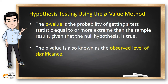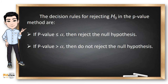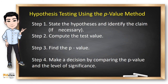Another way to test the hypothesis is the p-value method. The p-value, or observed level of significance, is the probability of getting a test statistic equal to or more extreme than the sample result, given that the null hypothesis is true. If the p-value is less than or equal to the level of significance, we reject the null hypothesis. If the p-value is greater than the level of significance, we do not reject the null hypothesis. The steps in the p-value method are shorter: after stating the hypothesis and identifying the claim, compute the test value to get the p-value, then compare the p-value and level of significance to make a decision.